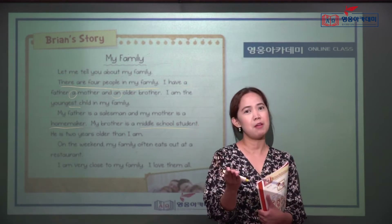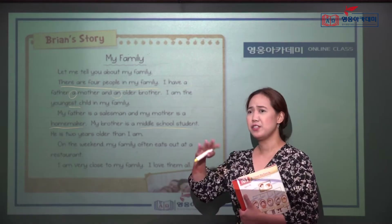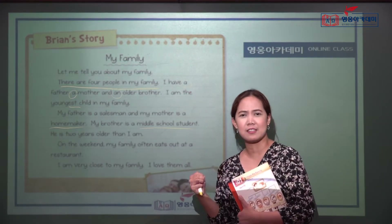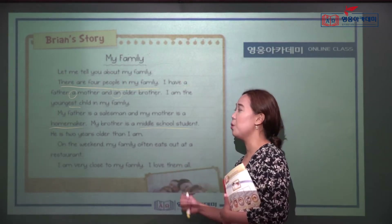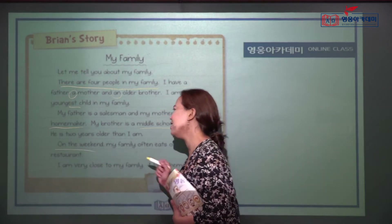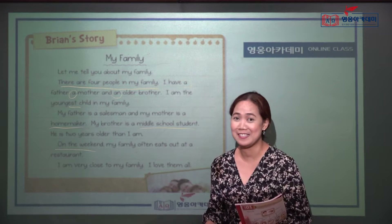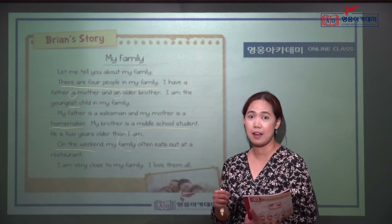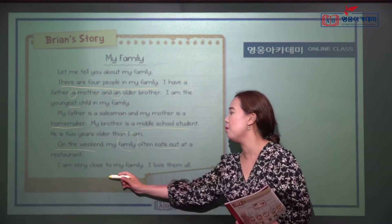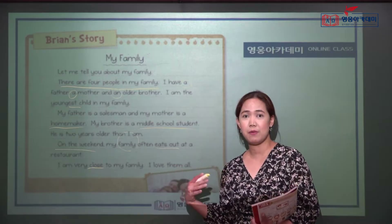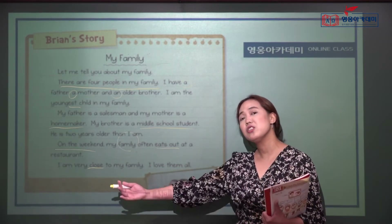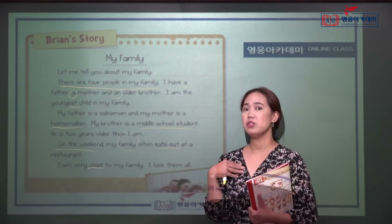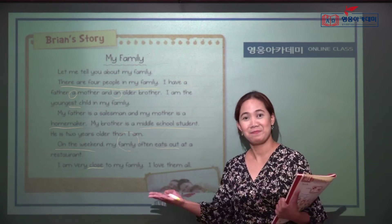My brother is a middle school student. The school levels go: kindergarten, elementary, middle school, high school. He is two years older than I am. On the weekend — you can also say 'on weekends,' they are the same — my family often eats out at a restaurant. 'I am very close to my family' means you have an affectionate relationship. When you are close to someone — family, siblings, or friends — you use the word 'close.'